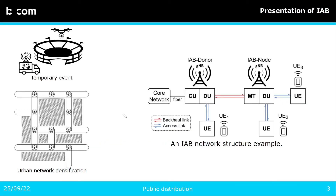Nowadays, the number of devices connected to wireless networks is constantly growing, and in order to guarantee their quality of service, 5G offers performance improvements and access to new frequency bands. These frequency bands allow higher throughputs and lower latencies, but at the detriment of a shorter range. That means that the number of base stations, or gNBs, must be increased in order to maintain complete coverage area. The installation of a gNB is expensive because it involves deploying fiber for the backhaul link.